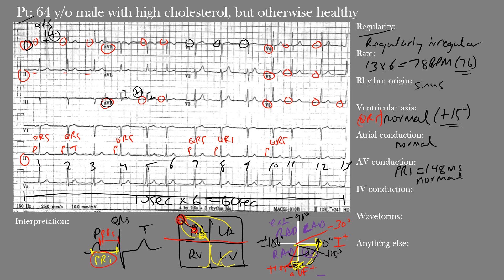Next is intraventricular or IV conduction, where we look at the duration of the QRS complexes. Normal QRS duration is between 80 and 110 milliseconds, or two to three small boxes. We're checking that the QRS interval is not prolonged. Here we can see narrow QRS complexes within normal limits — the QRS duration measured 82 milliseconds, which is within the 80–110 millisecond range. So IV conduction is normal with no intraventricular conduction delay. The QRS interval runs from the beginning to the end of the QRS complex.